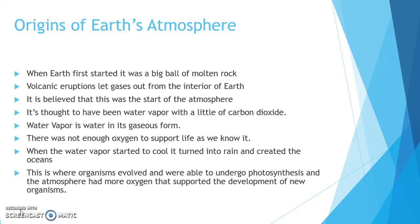It's thought to have been water vapor with a little bit of carbon dioxide. Water vapor, again, is water in its gaseous form. There was not enough oxygen to support life as we know it. When the water vapor started to cool, it turned into rain and created the oceans — as water vapor goes up, it cools and we get precipitation. This is where most organisms evolved and underwent photosynthesis, which turned the atmosphere into a more oxygen-rich environment, supporting the development of new organisms, including human beings.